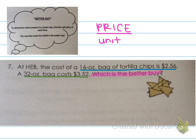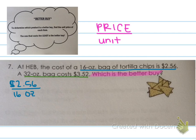Just as we talked about in the first video, when we set up the ratio, we need to write the price as the numerator and the unit or the item as the denominator. So let's start with the 16-ounce bag — it's $2.56, so that will be our numerator, and 16 ounces is the denominator. Then we can write the other ratio: $3.52 for a 32-ounce bag.